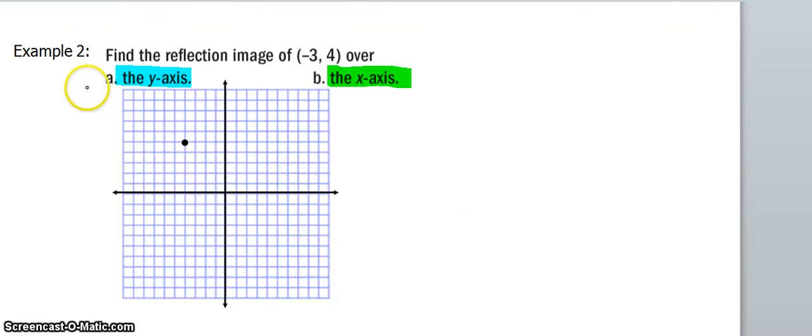All right, so here we're going to practice reflecting across the axes. And this is actually the most common type of reflection you'll make. So here we have the point negative 3, 4 already plotted for you. We're going to try to reflect that across the y-axis first and then across the x-axis second.